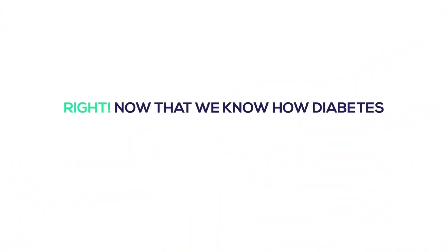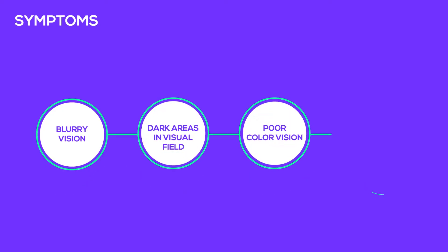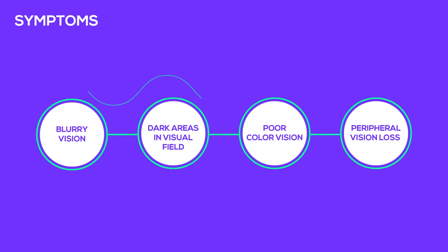Now that we know how diabetes can affect the eyes, it will be easier to learn the symptoms. Blurry vision, dark areas in the visual field, poor color vision, peripheral vision loss, or floaters are the typical symptoms. Though it's rare, complete vision loss can also occur in diabetes.